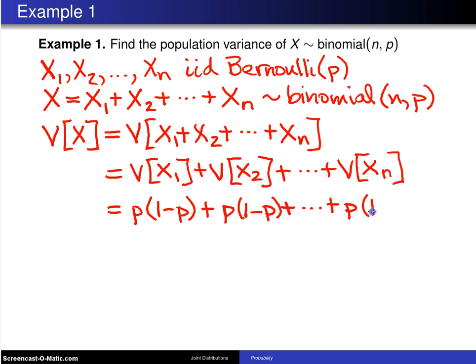And that will give us NP times 1 minus P, which is the variance of a binomial random variable. Now this approach, which is used right here, which is the variance of the sum is equal to the sum of the variances,